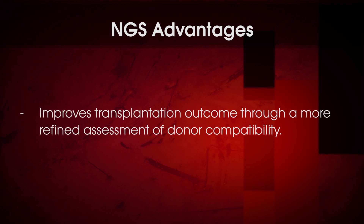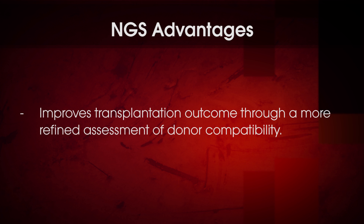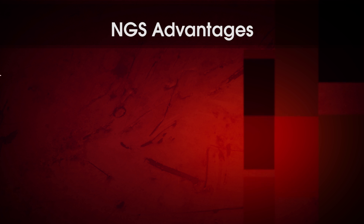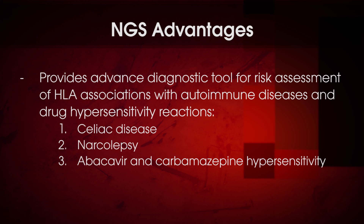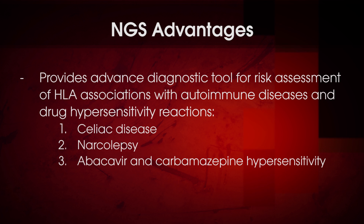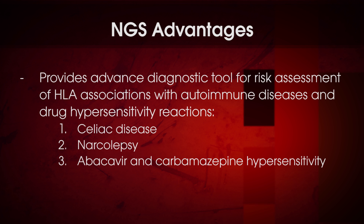Although the most significant initial impact of HLA typing by NGS might be in the selection of donors for transplantation, this new technology may also improve transplantation outcomes through a more refined assessment of donor compatibility. Furthermore, it also provides an advanced diagnostic tool for risk assessment of HLA allele associations with autoimmune diseases such as celiac disease and narcolepsy, as well as hypersensitivity reactions secondary to abacavir or carbamazepine exposure.